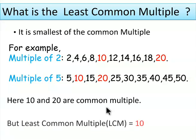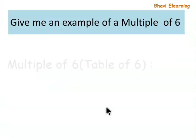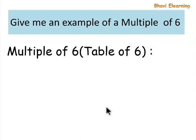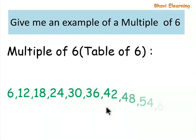Similarly, if we see an example of multiples of 6, or the table of 6, these are 6, 12, 18, 24, 30, 36, 42, 48, 54, 60, and so on.